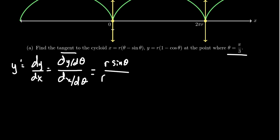For the denominator, you get r times the derivative of theta is 1, and the derivative of negative sine will be negative cosine. So you get 1 minus cosine theta for x on the bottom. The r's cancel out, in which case you get y prime as sine theta over 1 minus cosine theta.